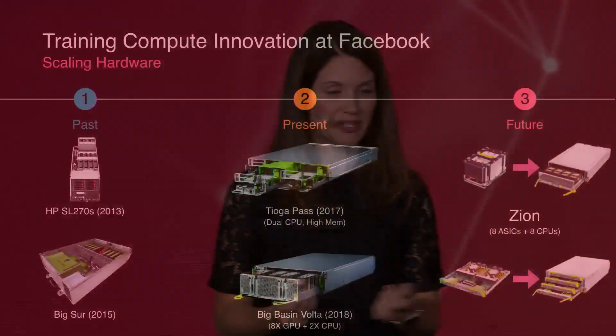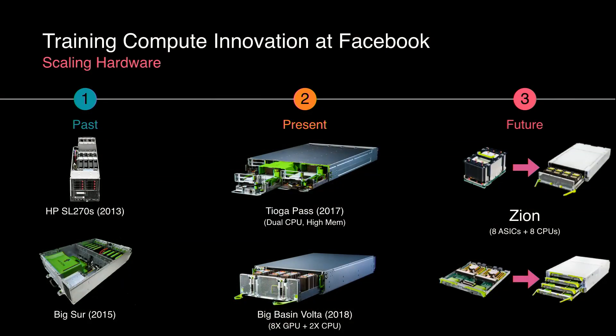Many of you may know that our hardware infrastructure is open-sourced through the Open Compute Program, so we are very transparent about the kinds of compute infrastructure we're designing at Facebook. Back in 2013, we were one of the first to deploy GPUs into production for machine learning training, starting with a commodity system. From using that for a couple of years, we realized we needed to innovate to meet our internal data center efficiency and power goals, so we designed Big Sur in 2015.